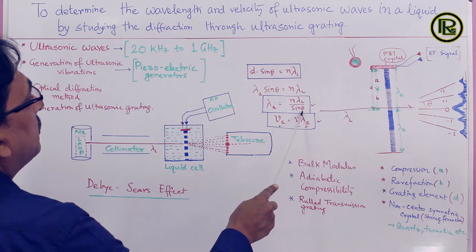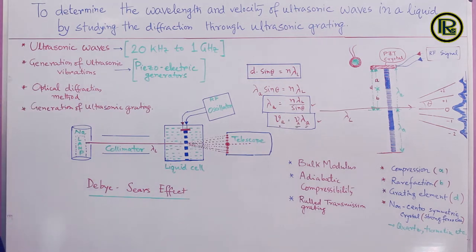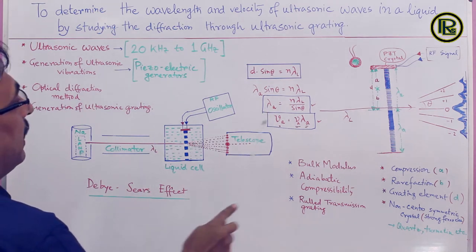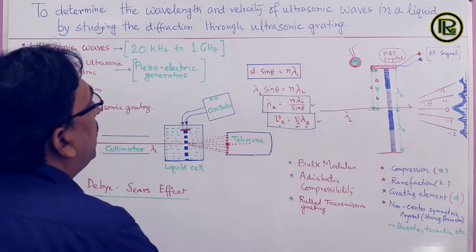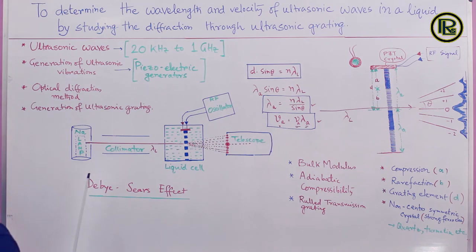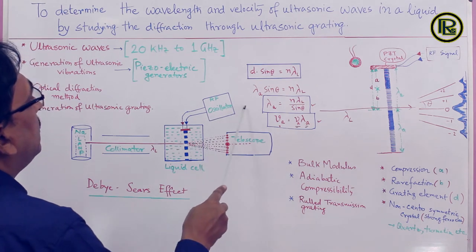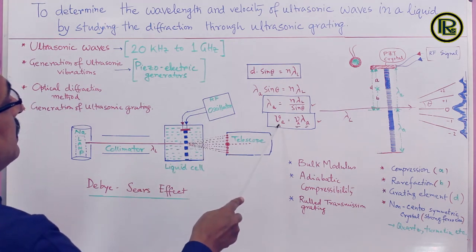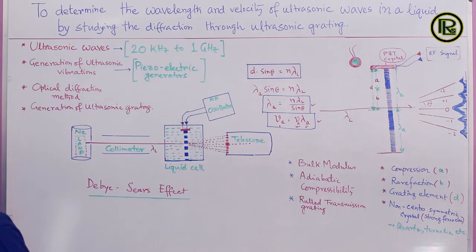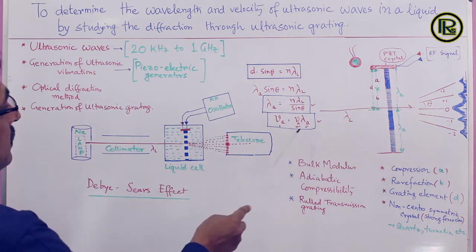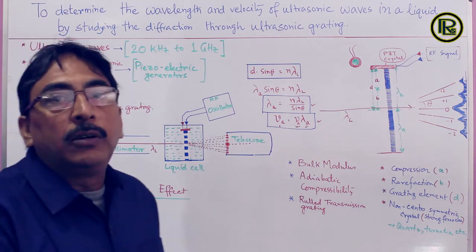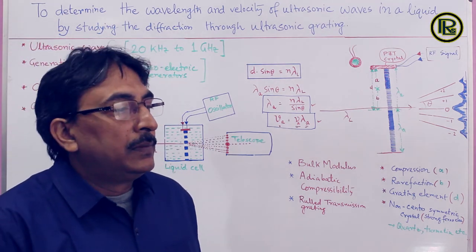By measuring θ for various orders of diffraction peaks, we can find λ_A for a given λ_L. As we can read the frequency of the RF oscillator from the display on the signal generator, we can then calculate the velocity of the ultrasonic wave through the liquid using the formula. Now I am going to give you the demonstration of the experiment.